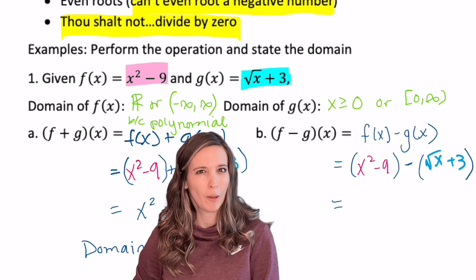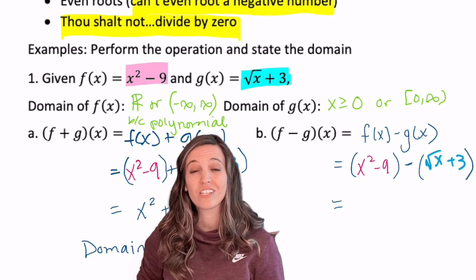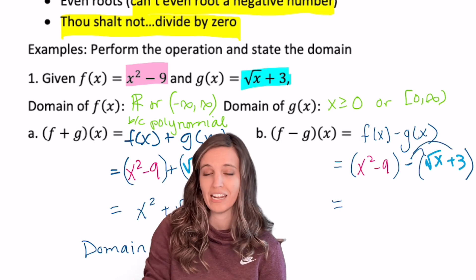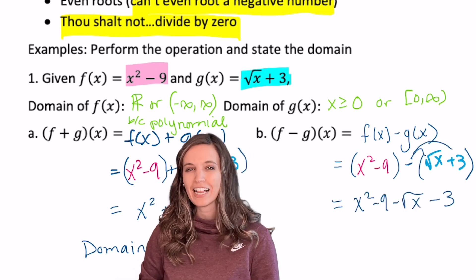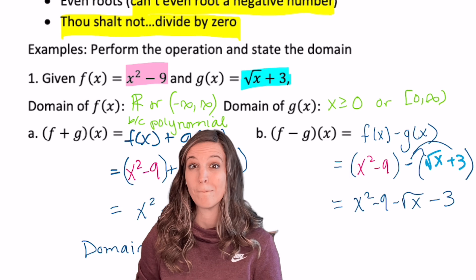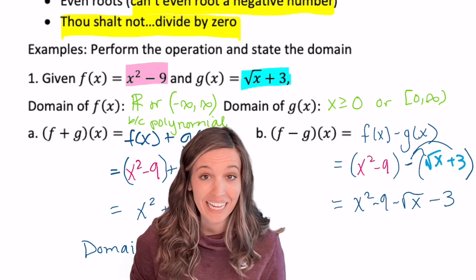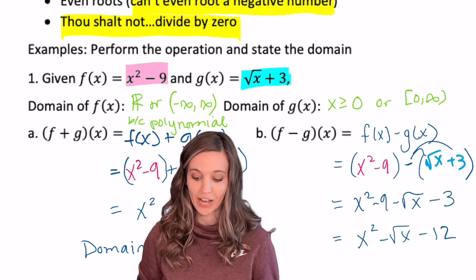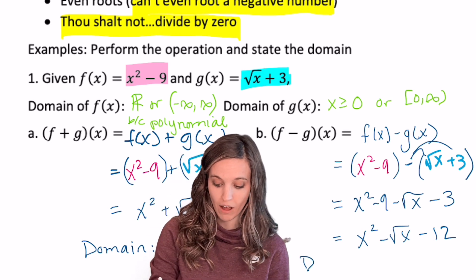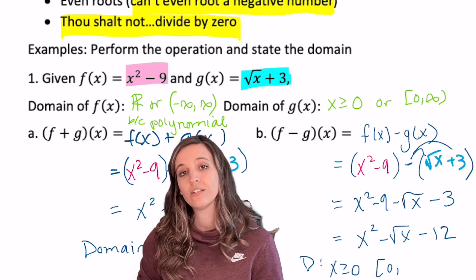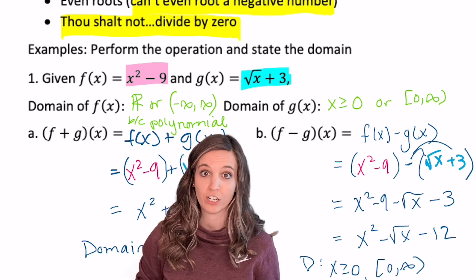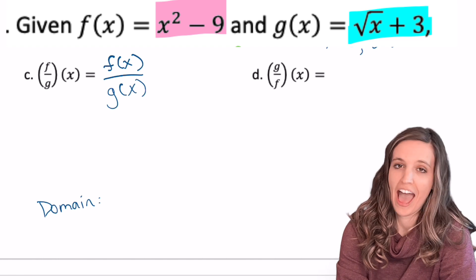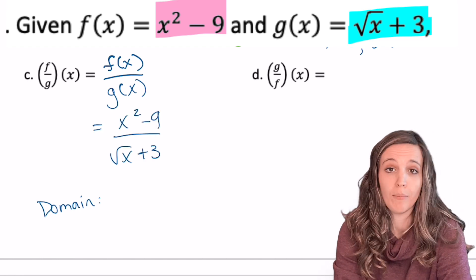For f minus g of x, be careful when subtracting — we need to subtract all parts of g of x, so distribute that negative. That leaves x squared minus 9 minus root x minus 3, which simplifies to x squared minus root x minus 12, with a domain of x greater than or equal to zero, again the most restricted domain.